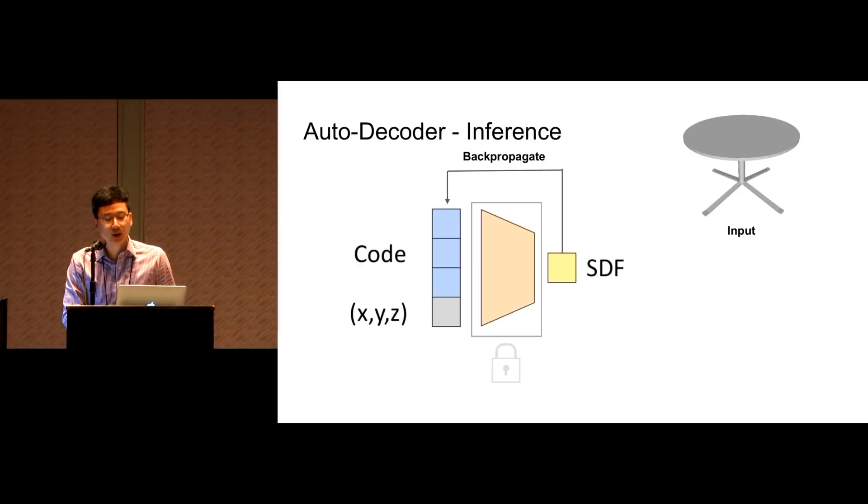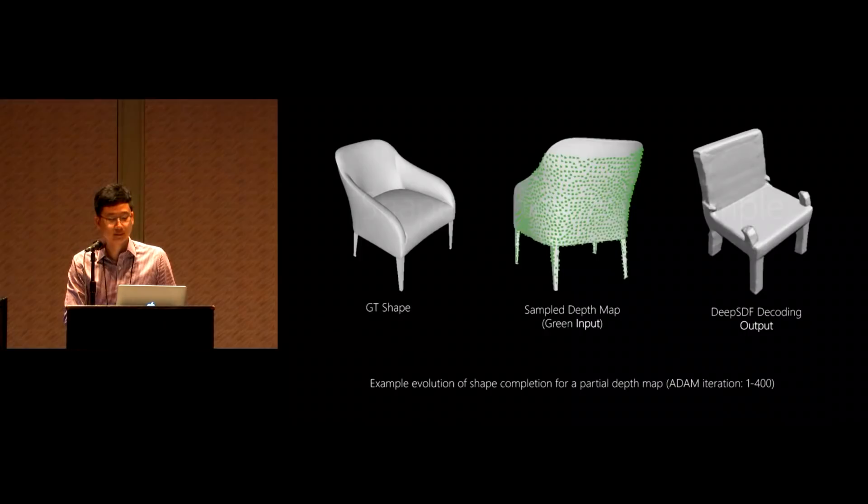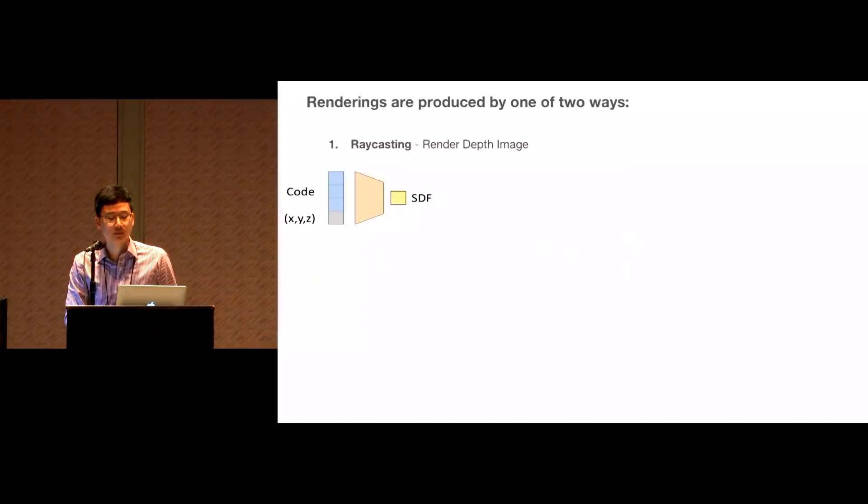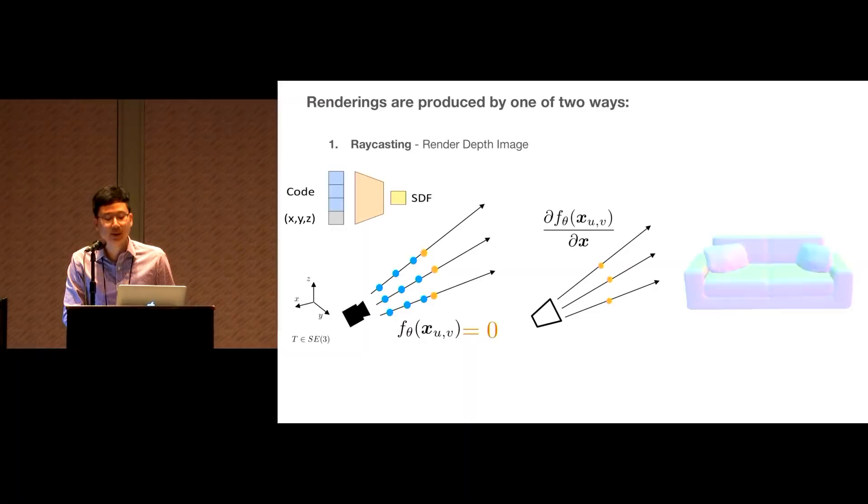During inference, we find an optimal code that best explains the input shape using gradient descent. Note that during the optimization, the trained decoder weights are kept frozen, and only the code is optimized. Inference can be done for reconstructing a full 3D shape. But our auto-decoder formulation allows inference on arbitrary number of SDF samples. For example, finding optimal code from a single depth map. Here we show a visualization of the inference process. The optimization tries to find the best code that matches the single depth map observation shown as green dots in the middle.